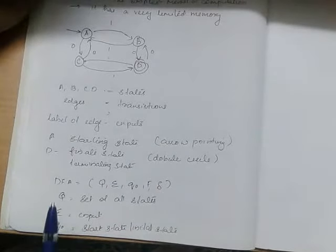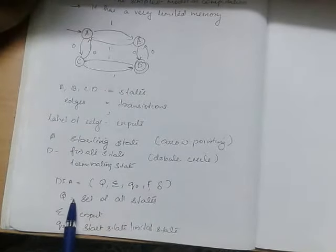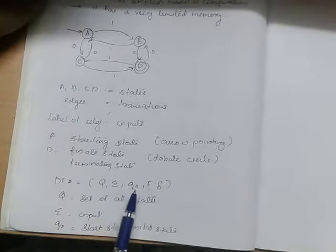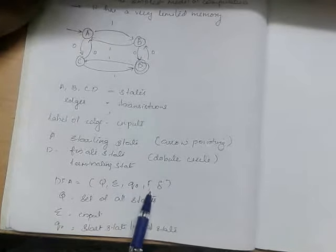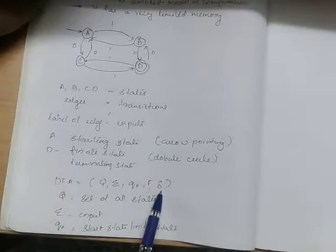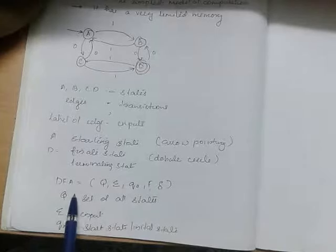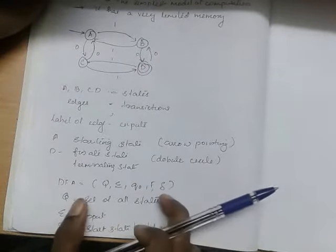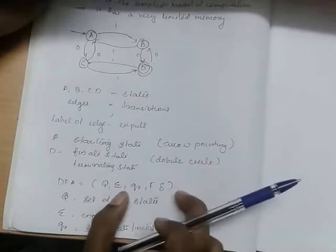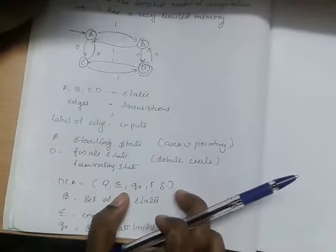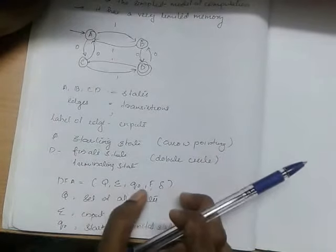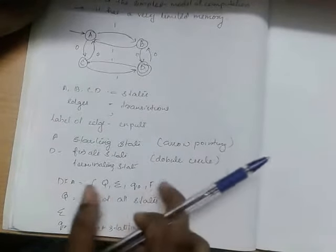A DFA is represented as a 5-tuple: DFA = (Q, Σ, q0, F, δ), where Q is the set of all states, Σ is the input alphabet, q0 is the initial state, F is the set of final states, and δ is the transition function.